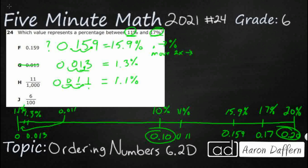Let's check our last one: 6 hundredths. That's going to be — move the decimal once, twice — just a measly 6%. So that places it right here on the number line, and that's not big enough. So my answer is F.